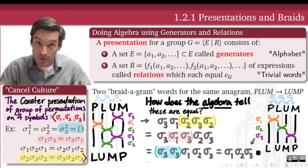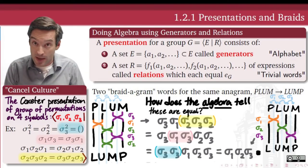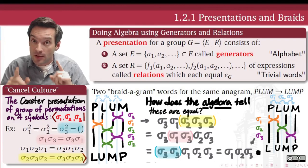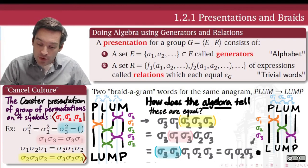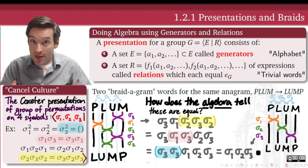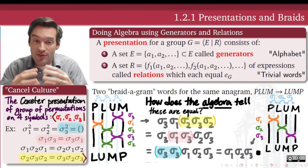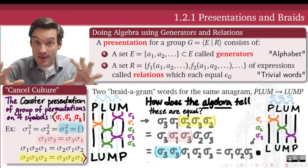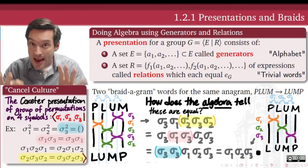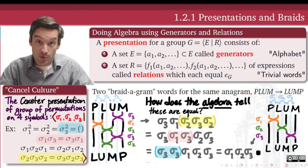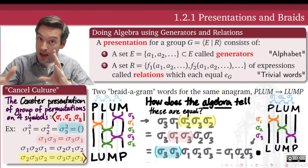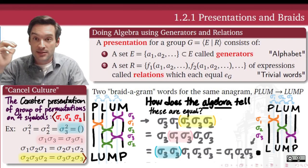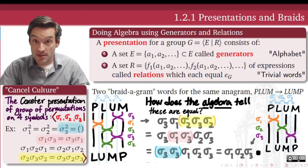The generators and relations viewpoint lets you use the building-block generators, along with relations that tell us how generators combine into trivial words we can cancel, to do algebra. Showing using purely algebraic properties that two words are equal gives us a verification that two different braidograms represent the same element in our algebraic structure. Whenever we use this viewpoint, we want to hold both perspectives: how does the geometry of the braid diagram tell a story of sameness, and how is that story of sameness also reflected in the algebra we're using to represent these objects?